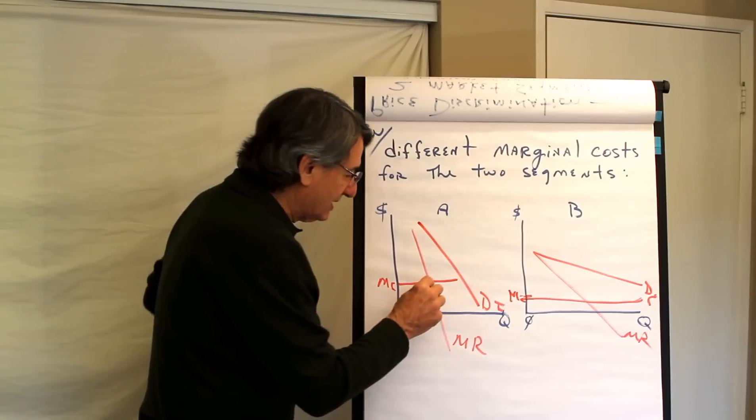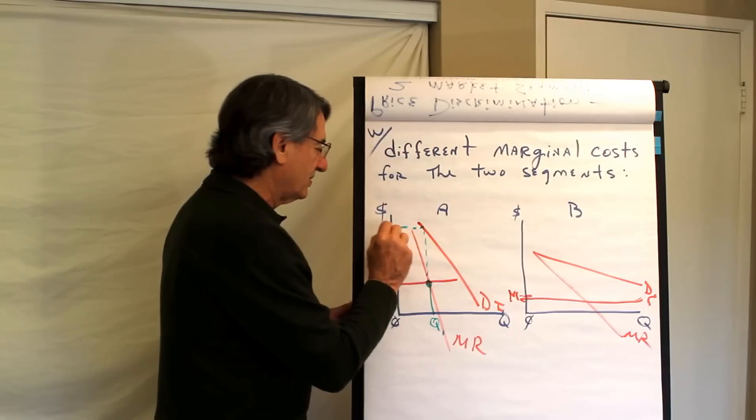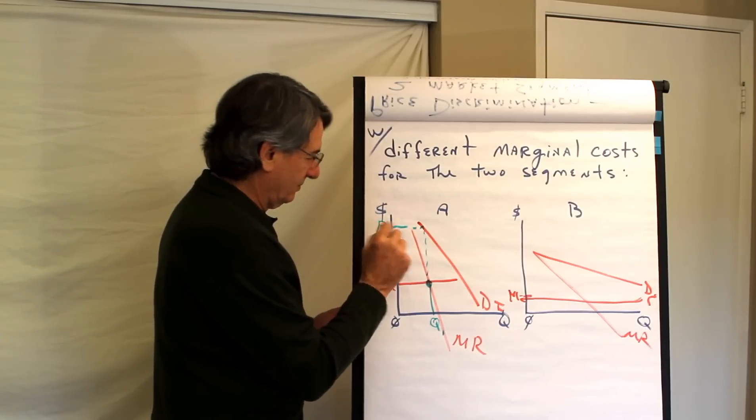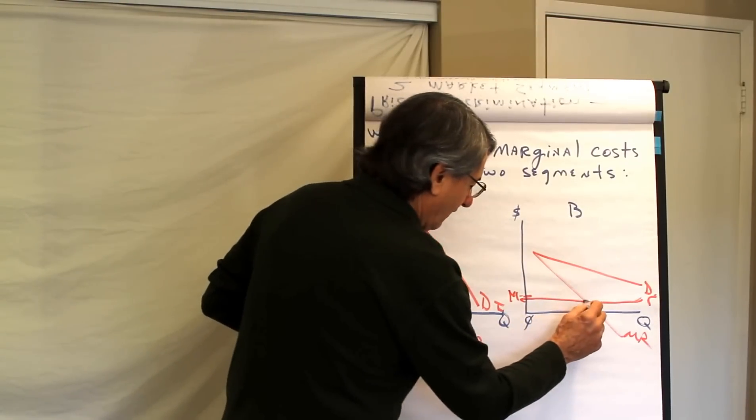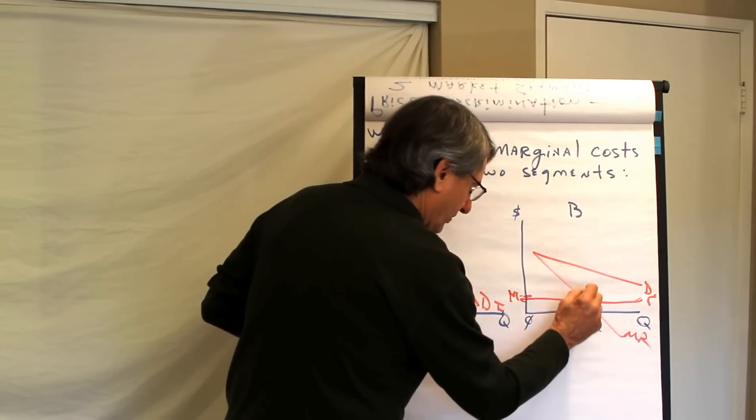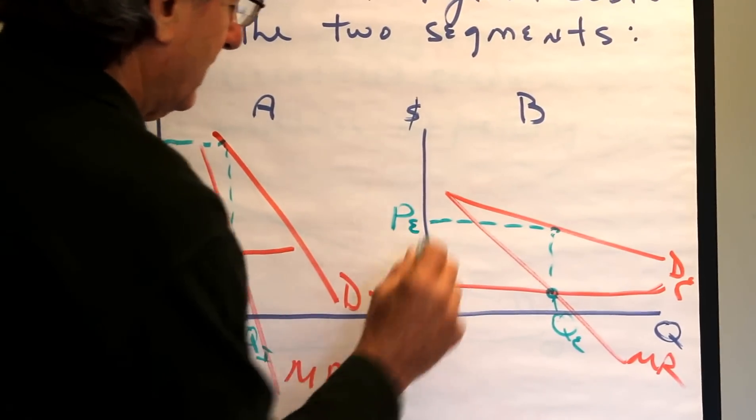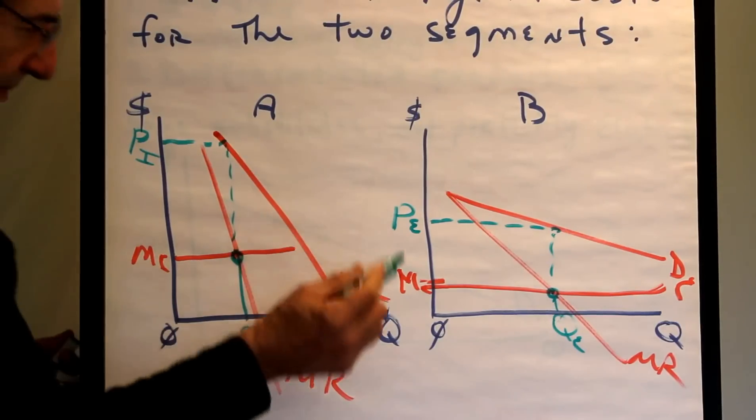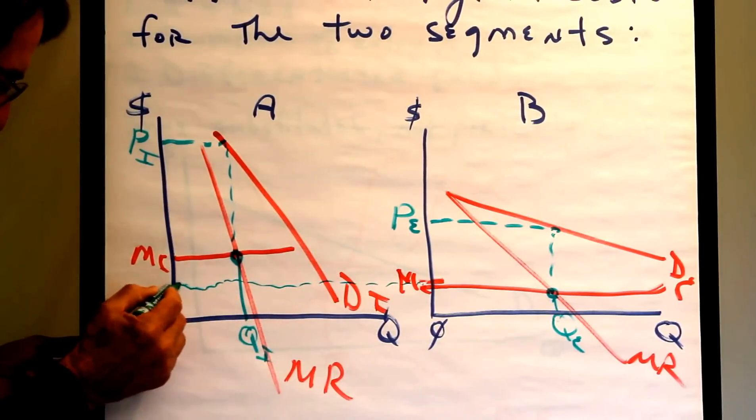what quantity will this firm want to sell to the inelastic group? That quantity. And what price will they charge? That price. For the inelastic group. And for the elastic group, they will charge that. They will produce that quantity and sell to them. And they will charge price P sub E to the elastic group. But I don't know if you can see, the difference between the marginal cost is about that much. But the difference in price is much greater than that.